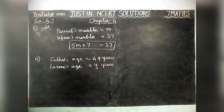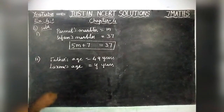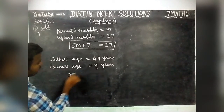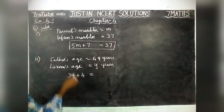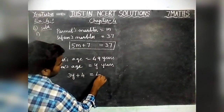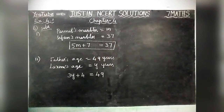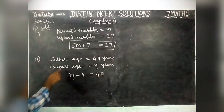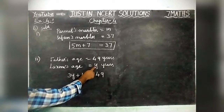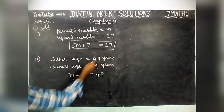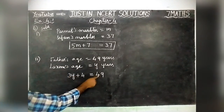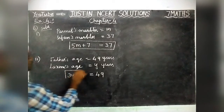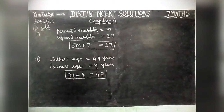He is 4 years older than 3 times Lakshmi's age. So, 3 times of Lakshmi's age is 3Y, plus 4 is equal to father's age. Father's age is equal to 49. Lakshmi's age is equal to Y years, and father's age is 49. So, 3Y + 4 = 49 is the required equation.